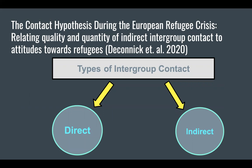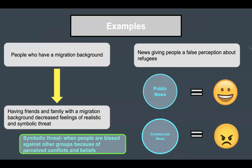In the article by DeConnick, DeHannins, and DeDios, they mentioned two types of intergroup contact: direct and indirect. An example of direct contact would be encountering people who have a migration background, including having friends and family of a migration background, which would decrease feelings of realistic and symbolic threat.